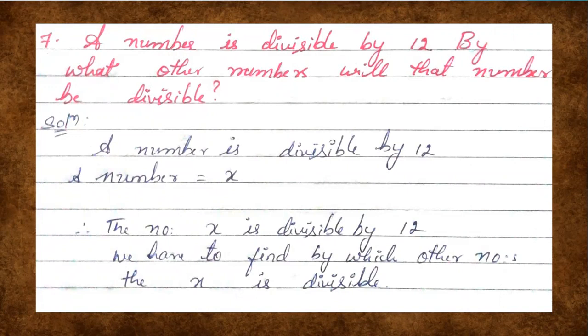Solution. Let the number be x. So x is divisible by 12. We have to find by which other numbers x is divisible. It is already given that x is divisible by 12, so we have to find x is divisible by which other numbers.